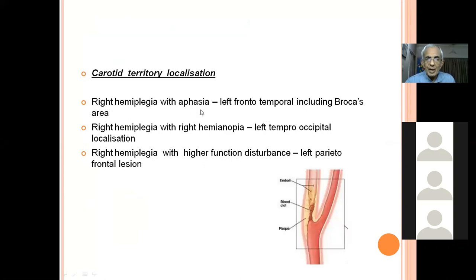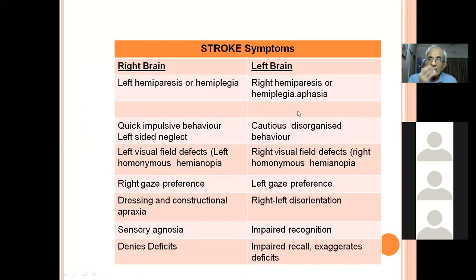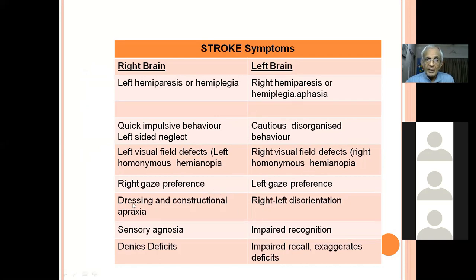For carotid territory localization, when a patient has hemiplegia, look for aphasia, hemianopia, or higher function disturbance. Aphasia means left-sided frontotemporal involvement; hemianopia means temporooccipital; higher function disturbance means frontoparietal. Both right and left hemisphere strokes cause contralateral hemiplegia and visual field defects. In the acute phase there is a gaze preference. Right brain involvement causes constructional apraxia and dressing apraxia; left brain causes right-left disorientation. Right brain strokes tend to deny deficits; left brain patients exaggerate them.